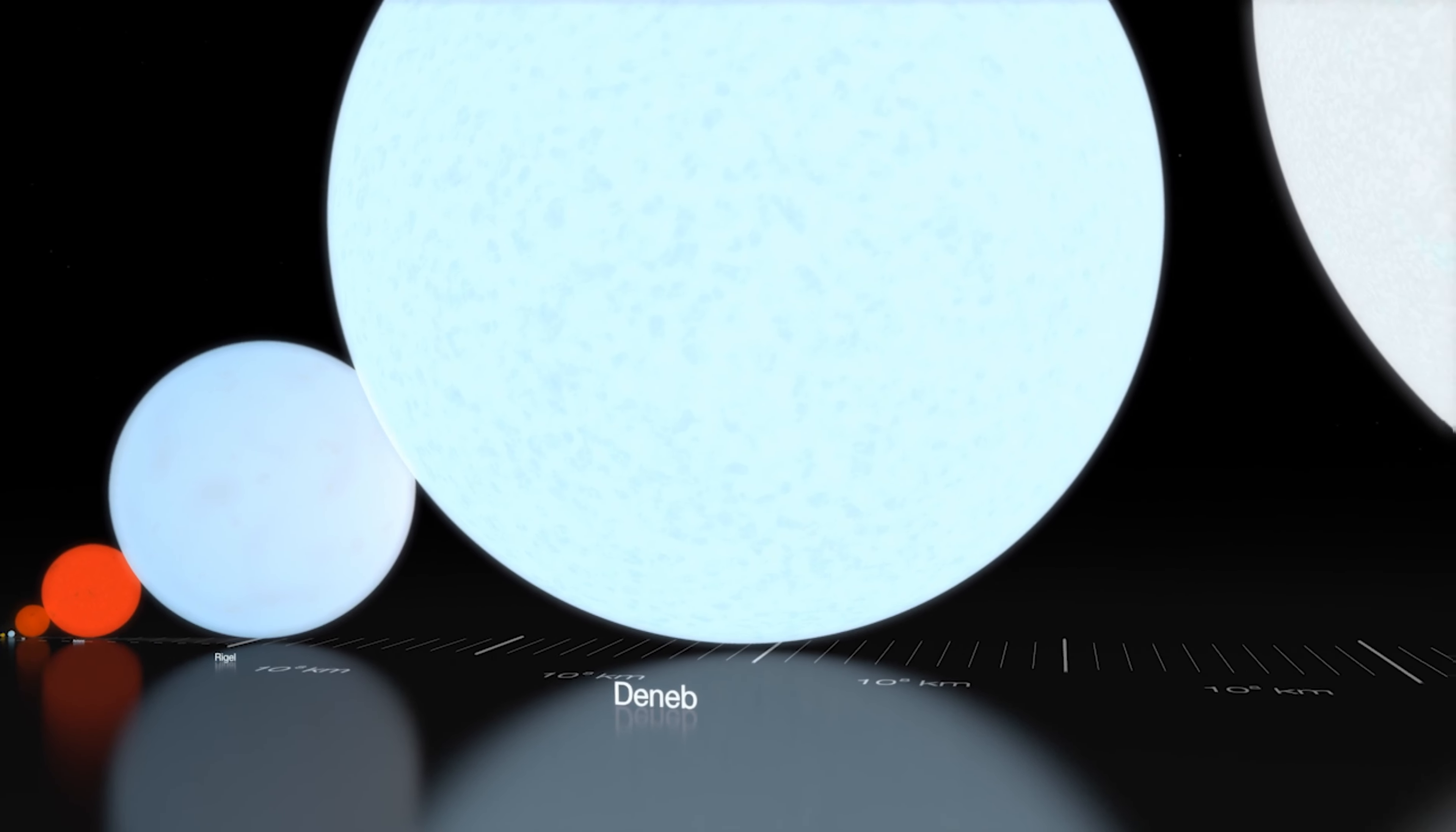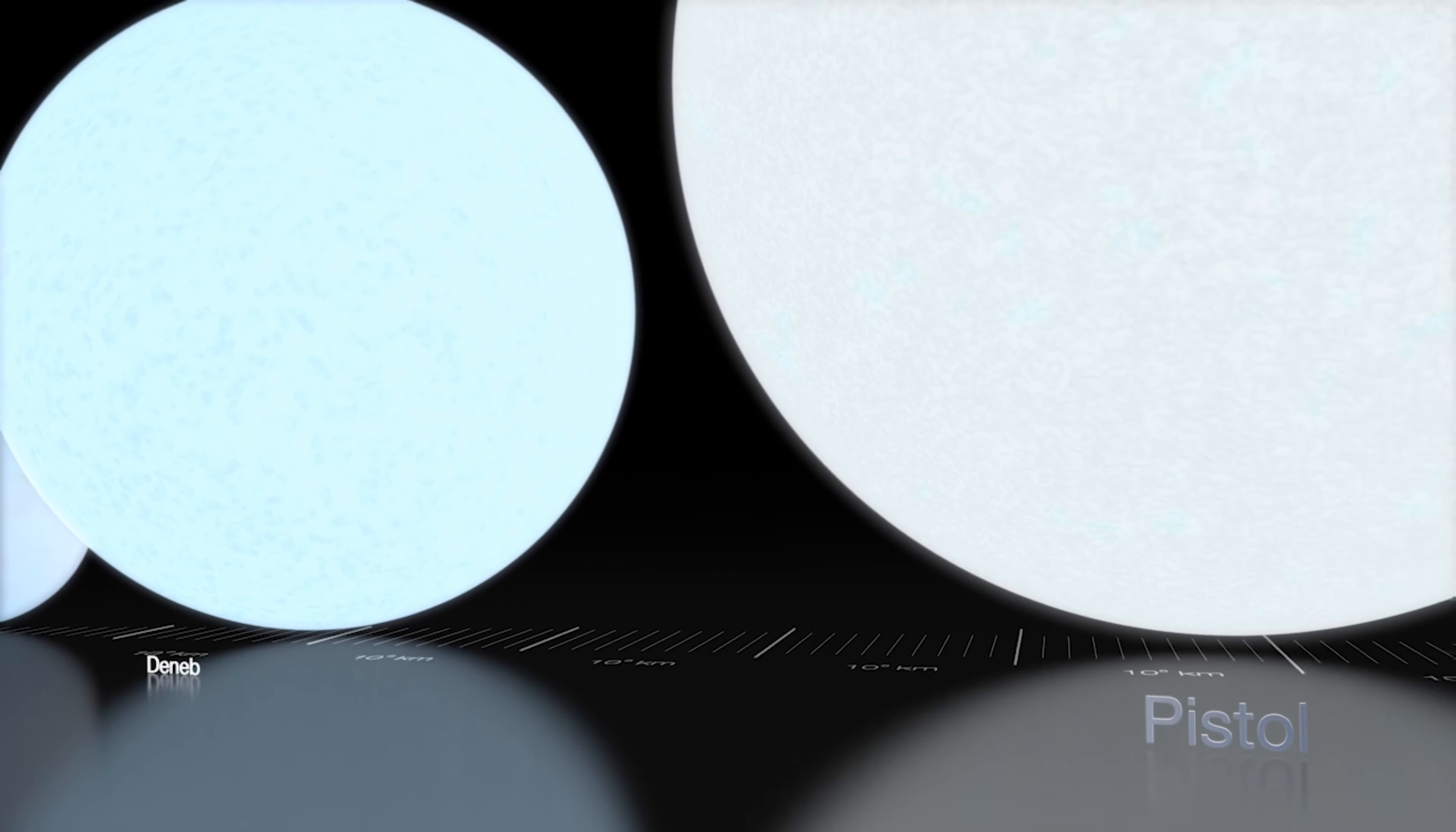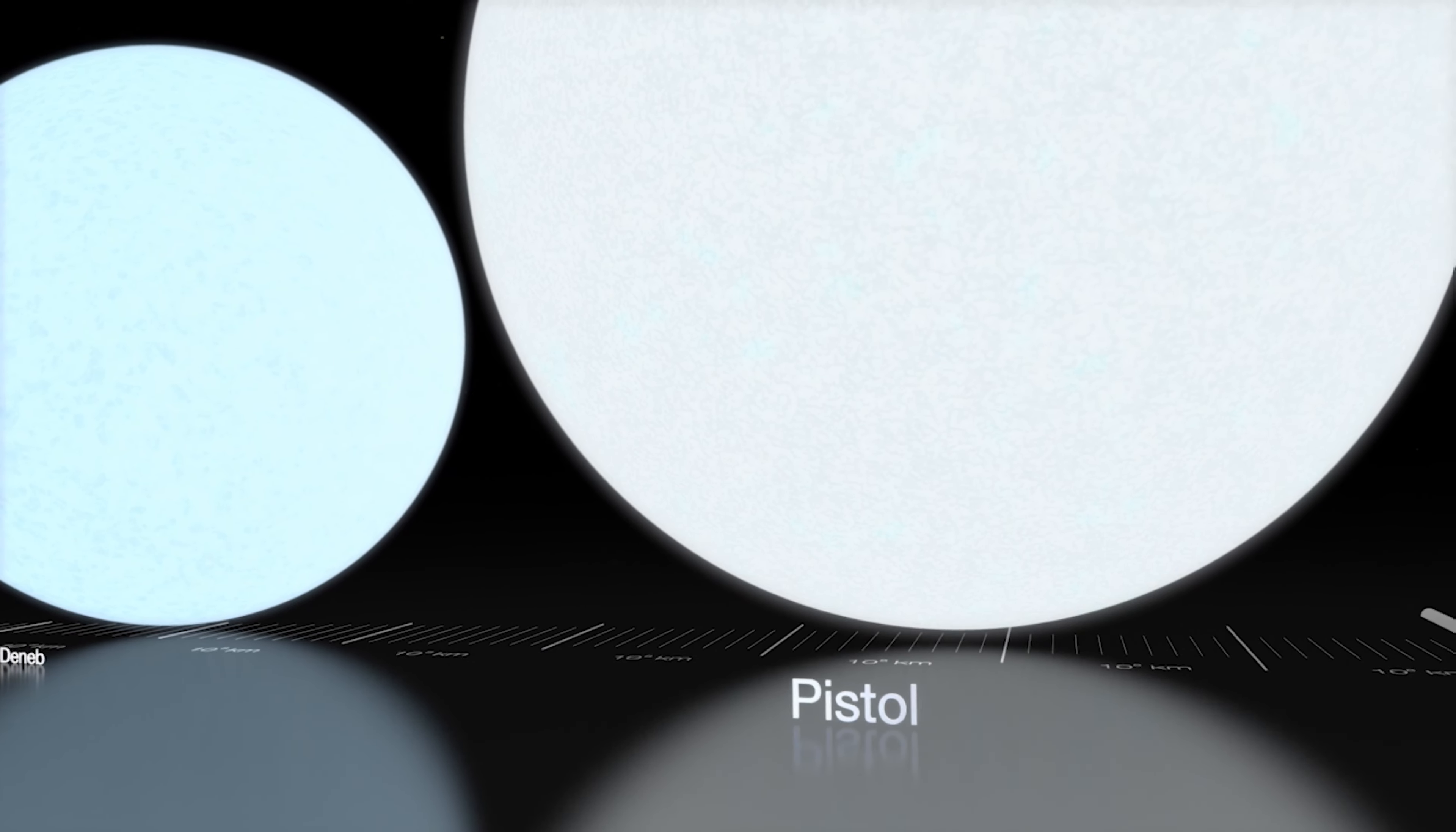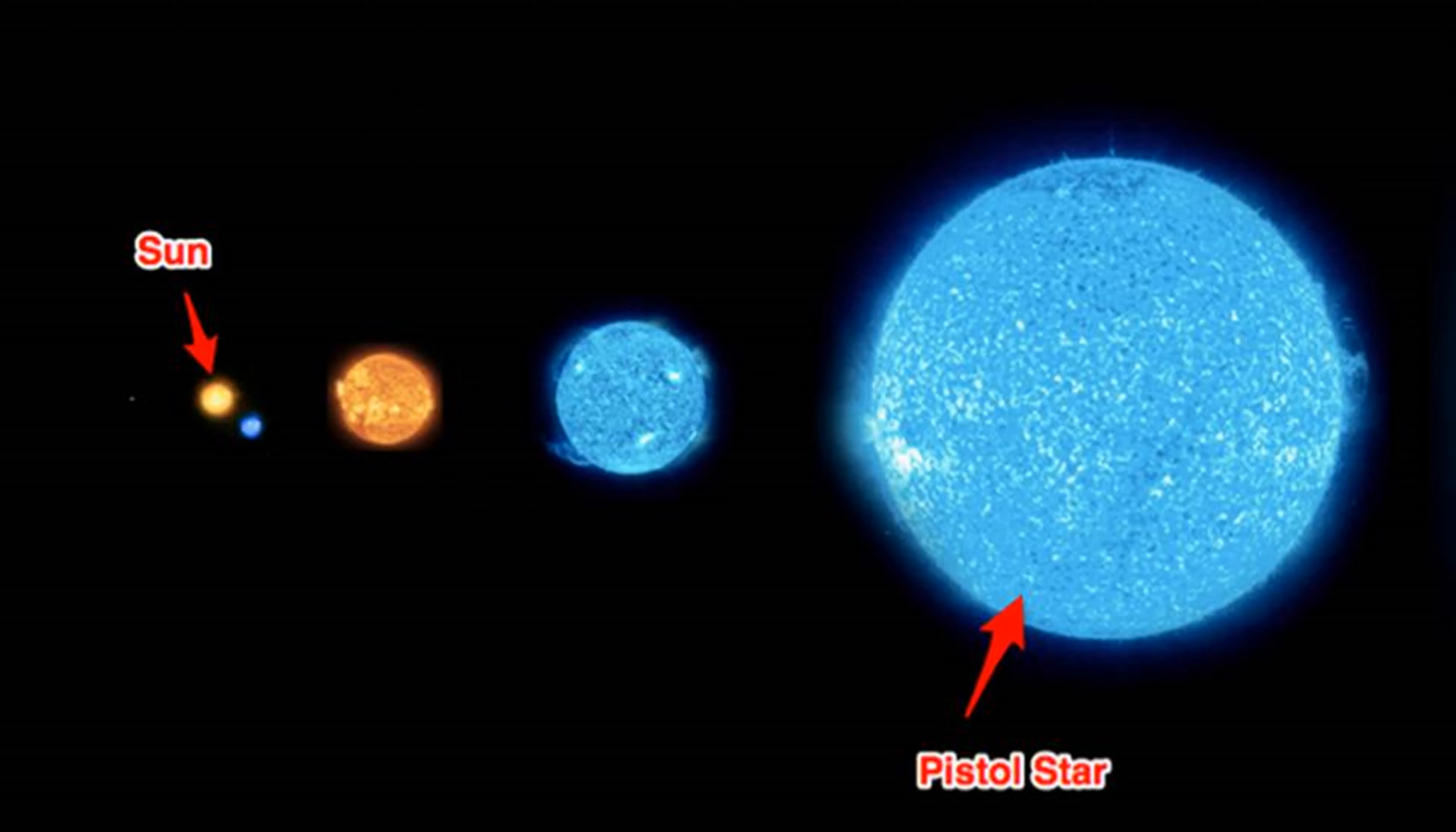The Pistol Star is still very large in volume. It has a mass about 100 times the mass of the Sun and a radius of about 100 million miles, comparable to the Earth's Sun distance, or about 300 times the radius of the Sun.